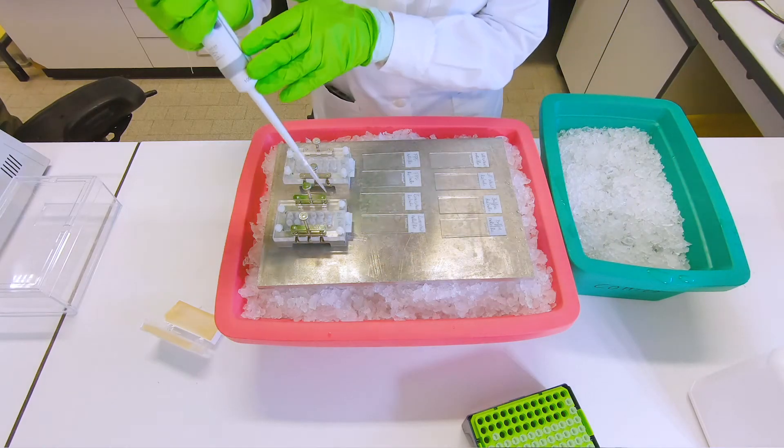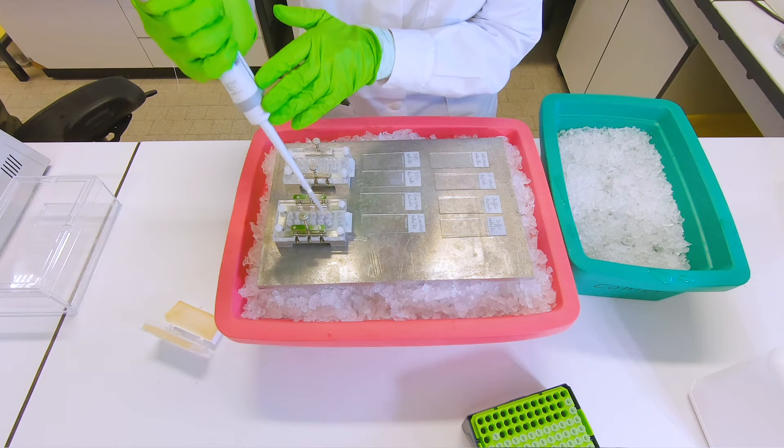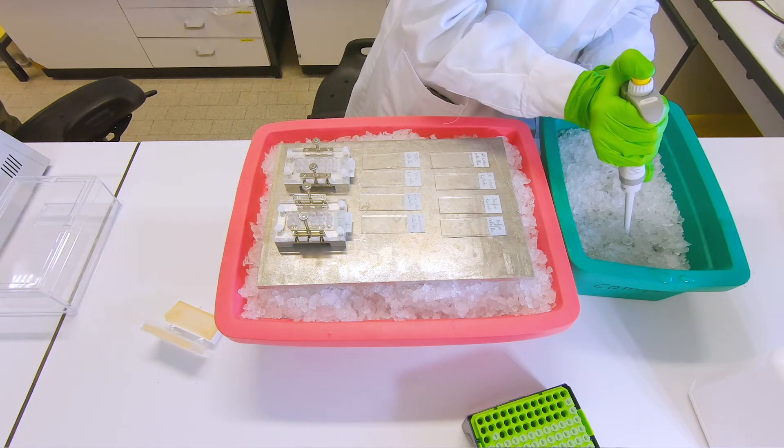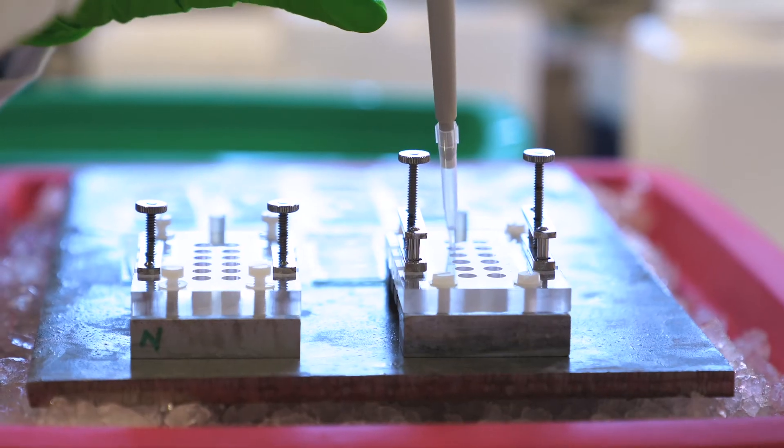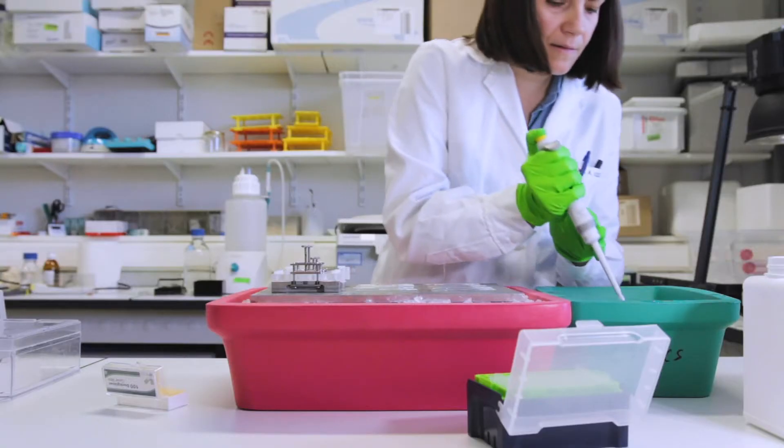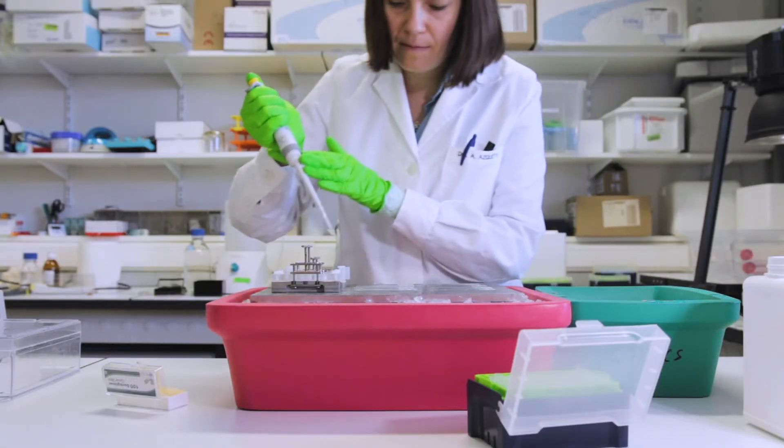Okay, so next is the 12 gel system. In this system we only use 30 microliters per gel. So in each well we put 30 microliters. So now first we're doing the buffer control.